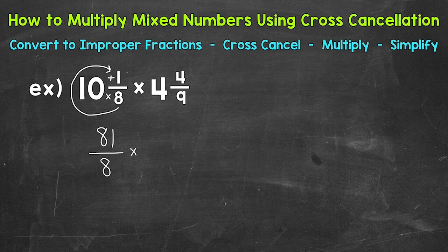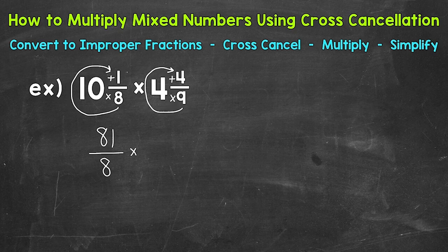We'll bring our multiplication sign down and then convert our second mixed number. Start at the bottom — we multiply then add. So 9 times 4 is 36, plus 4 is 40. So that's our numerator, and we keep our denominator of 9 the same. So we have 81 eighths times 40 ninths.